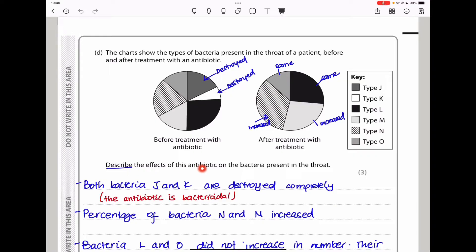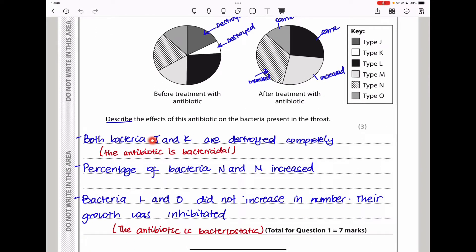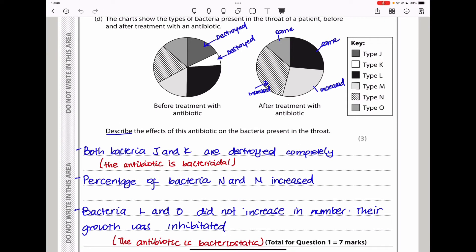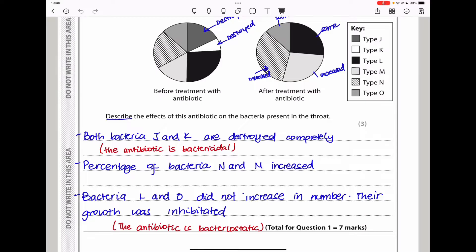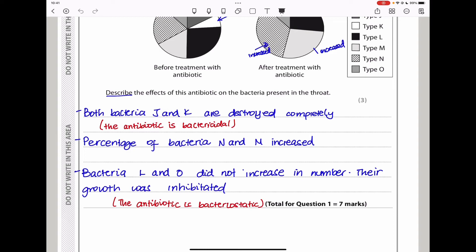So when they say describe the effects of antibiotics on the bacteria present in the throat, we can see that both J and K are completely destroyed. So the antibiotic was bacteriocidal. The percentage of bacteria N and M increased. And the bacteria L and O did not increase in number, so their growth was inhibited. It means the antibiotic used was bacteriostatic for them. So this brings us to the end of question one.